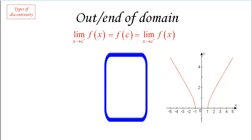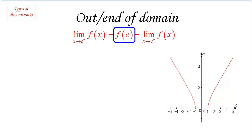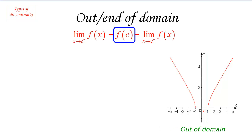If we pick a c outside the domain of the function — in an interval where there is no graph and the function cannot be evaluated — the middle part of the continuity definition cannot be satisfied; f(c) cannot be computed. This is the out-of-domain situation. It's not particularly interesting as far as continuity is concerned, since if we don't have a function we're not really interested in whether it's continuous or not.